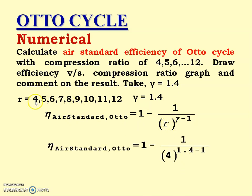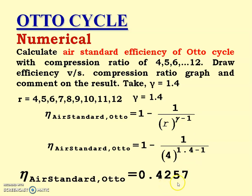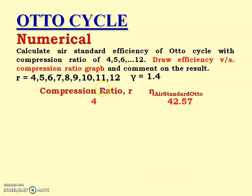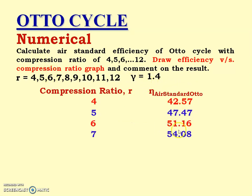Putting R = 4 and gamma = 1.4, the answer is 0.4257, that is 42.57%. Putting R = 5 and gamma = 1.4, the answer is 47.57%. Substituting R = 6 and gamma = 1.4, the answer is 51.16%. For R = 7, the answer is 54.08%.